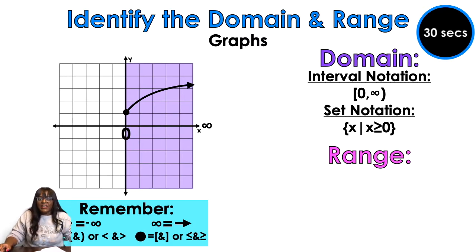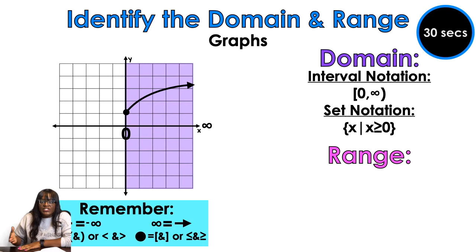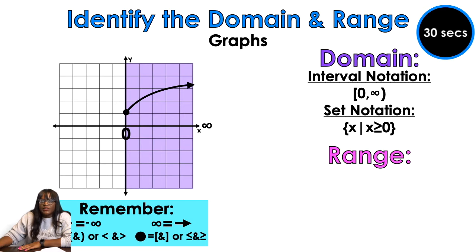Greater than because there's nothing less than zero. I don't have an x-value at negative one, I don't have an x-value at negative a thousand — I have nothing on the x-axis on that side. But all the numbers that are greater than zero — one, two, three, four point five, two point six seven, a thousand — all of those values are going to have an x-value.